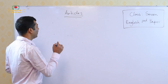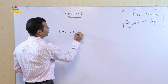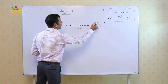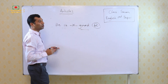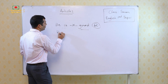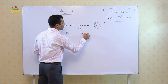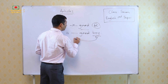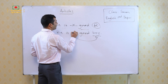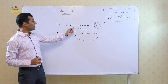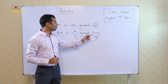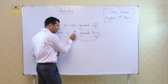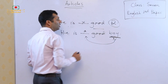For example, he is good — is there any noun? There is no noun, so it will be a cross. But if I use 'he is ___ good boy', you can see here that 'boy' is the noun. Only for this, we have to use the article 'a': he is a good boy. So article is directly connected with the noun.